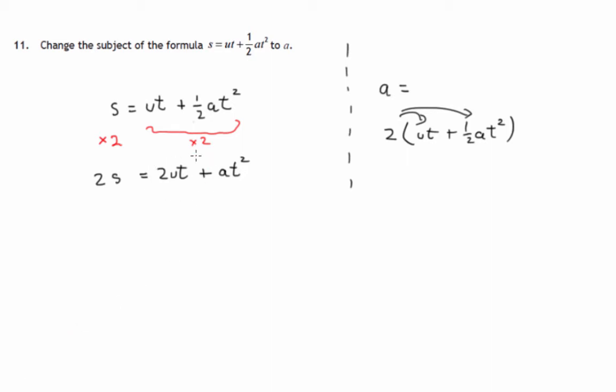I'm now looking at this adding 2UT, and I'm going to do the opposite of that. The opposite of adding 2UT would be subtracting 2UT. So to both sides of this equation, I'm going to subtract 2UT. On the left hand side, I started out with 2S, I now subtract 2UT from it. This, when I subtract 2UT, that disappears, and I'm just left with the A T squared.